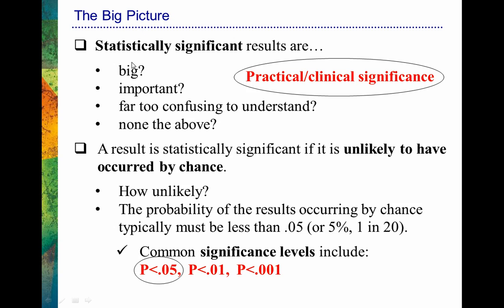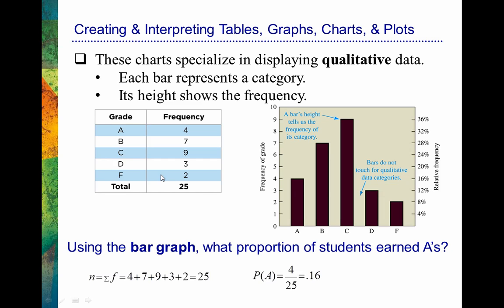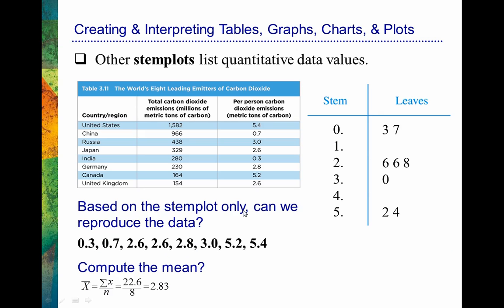In general, we're typically trying to find if we have statistically significant results. It's important that we understand what that means and how different concepts contribute to the big picture. Now let's talk about actually computing things — that's a really straightforward part of the exam. We need to be able to create and interpret basic things like tables, graphs, charts, and plots. Here's an example of a frequency distribution table and frequency distribution graph — from these graphical representations we should be able to pull data like the overall n or the probability of scoring in some particular category. Here's another example with a stem-and-leaf plot — from that plot we should be able to pull data and compute something like a mean.